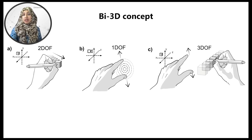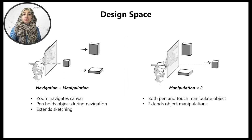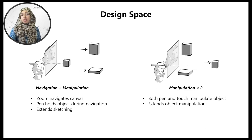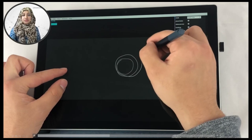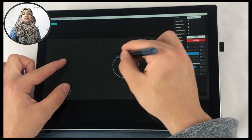As 3D manipulations are diverse, we explore the application design space of the concept. We see two distinct application areas: Navigation plus Manipulation, and Manipulation times two. In the former, the zoom gesture performs the expected command to navigate the canvas camera, and the object held with the pen moves with the camera, so the object's position is manipulated when navigating the scene. This is suitable for extending 2D apps like Microsoft Paint — a parallel pinch will directly extend sketching to 3D, allowing one to quickly create 3D shapes like a dynamic spiral form.